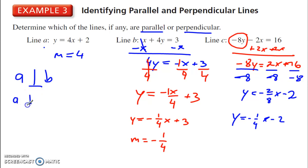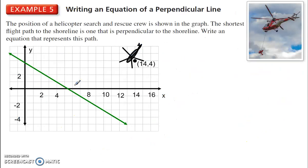So y is equal to negative 1 fourth x minus 2. So line A is perpendicular to line B, line A is perpendicular to line C, and line B is parallel to line C. Here we have opposite reciprocals, so these are perpendicular, and then these two slopes are the same, so those two lines are the same.